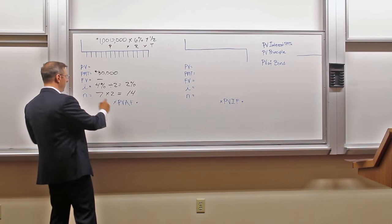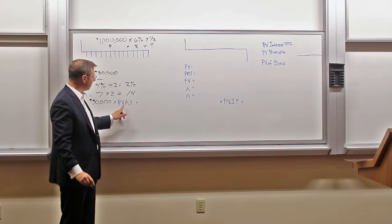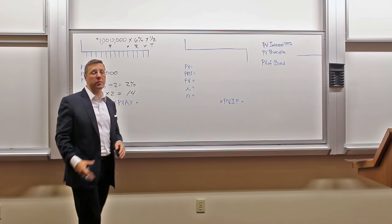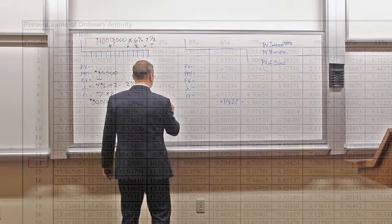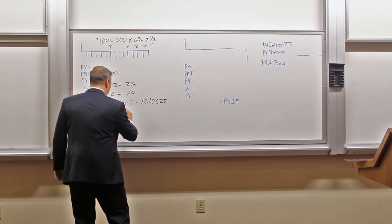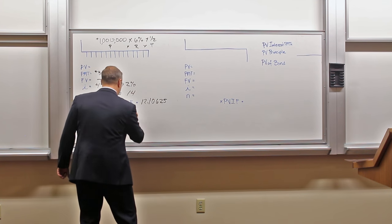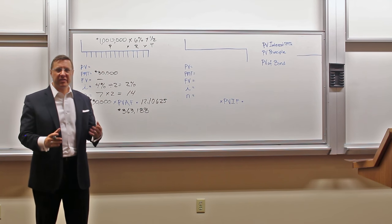Correspondingly, we take our payment, which is $30,000, and we go to our tables to find a present value annuity factor. So it's the present value of an ordinary annuity. When we look that up on the table, we run our finger over to 2% and down to 14 periods and we find the number 12.10625. When we multiply 30,000 by that number, the present value is $363,188. That's the first half of this problem.